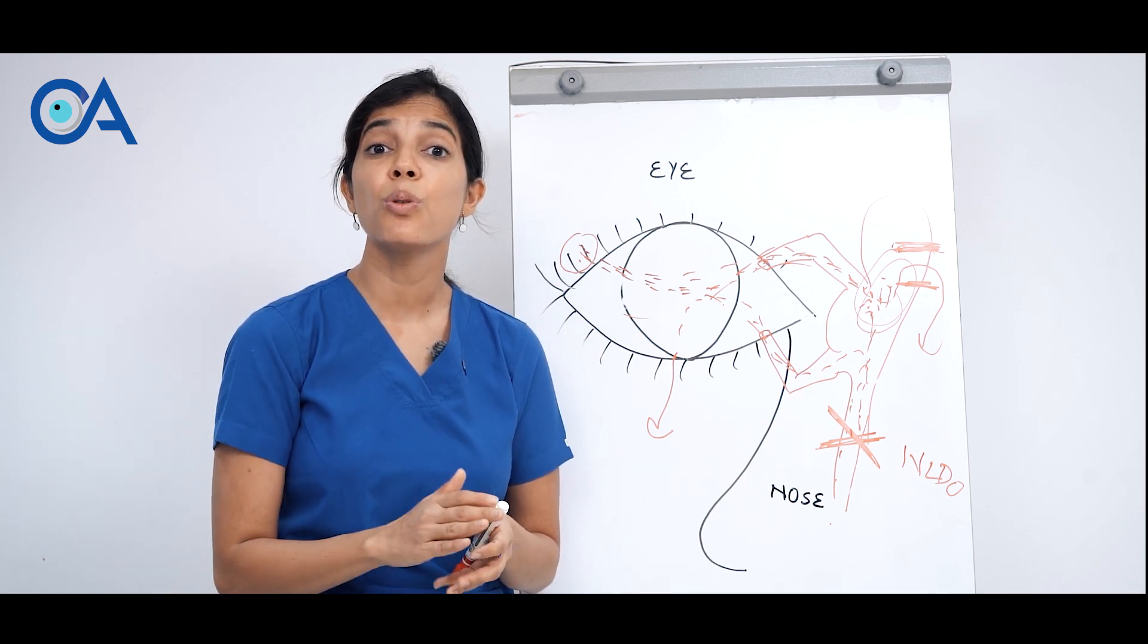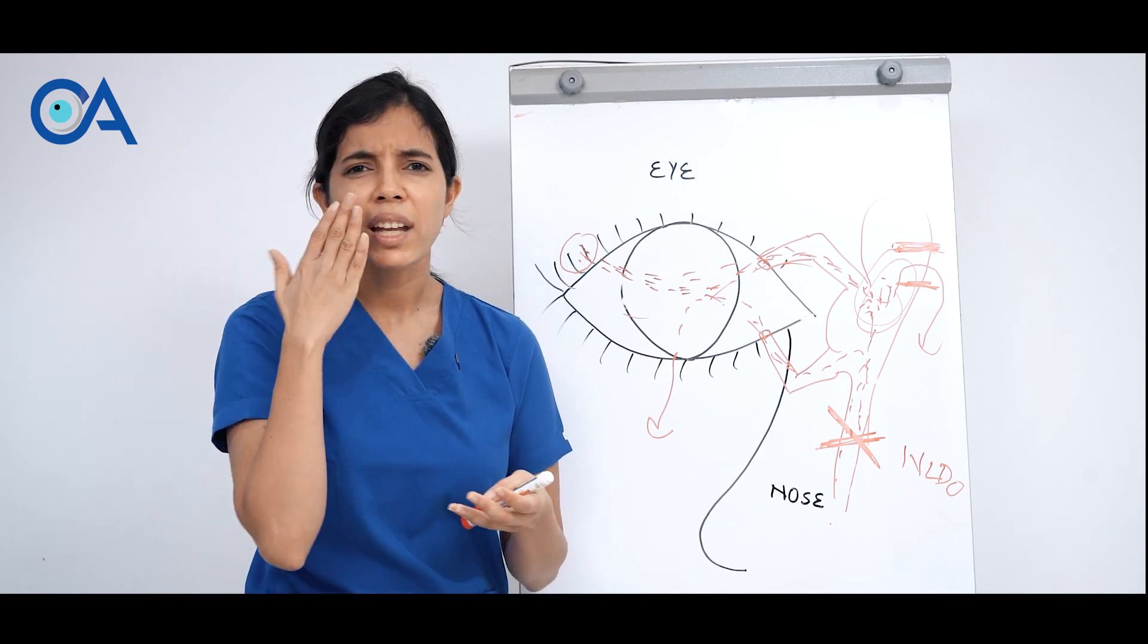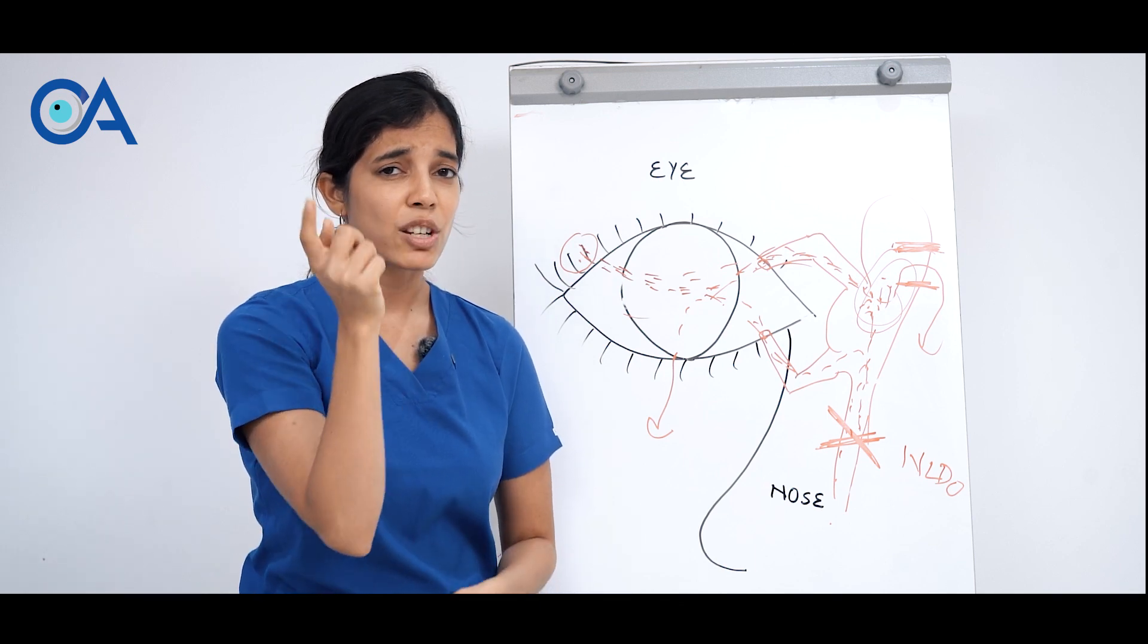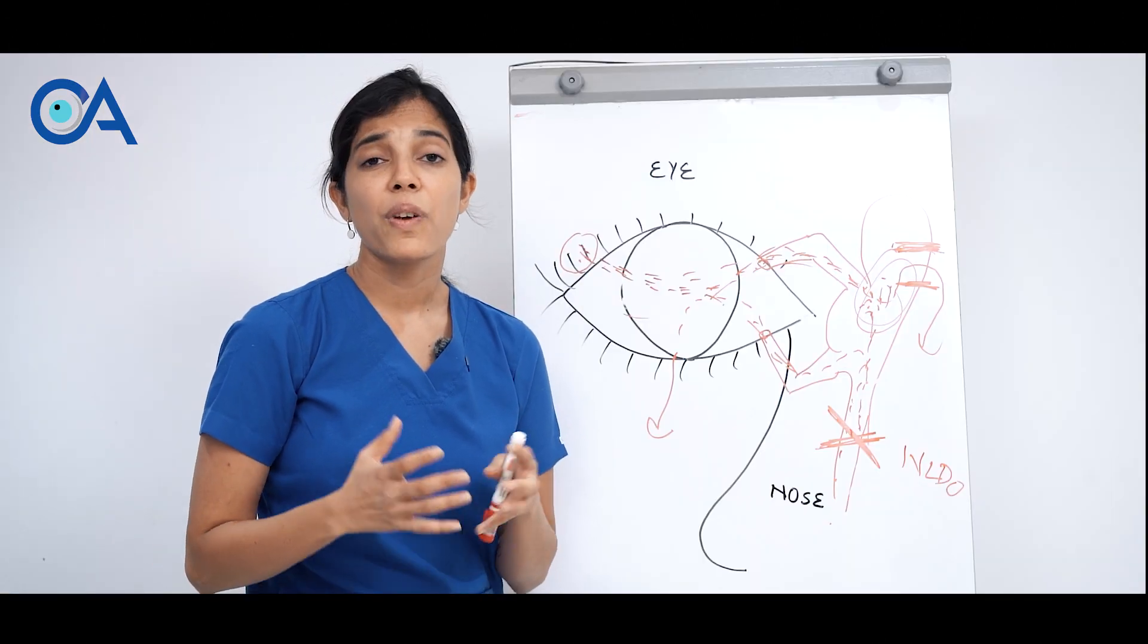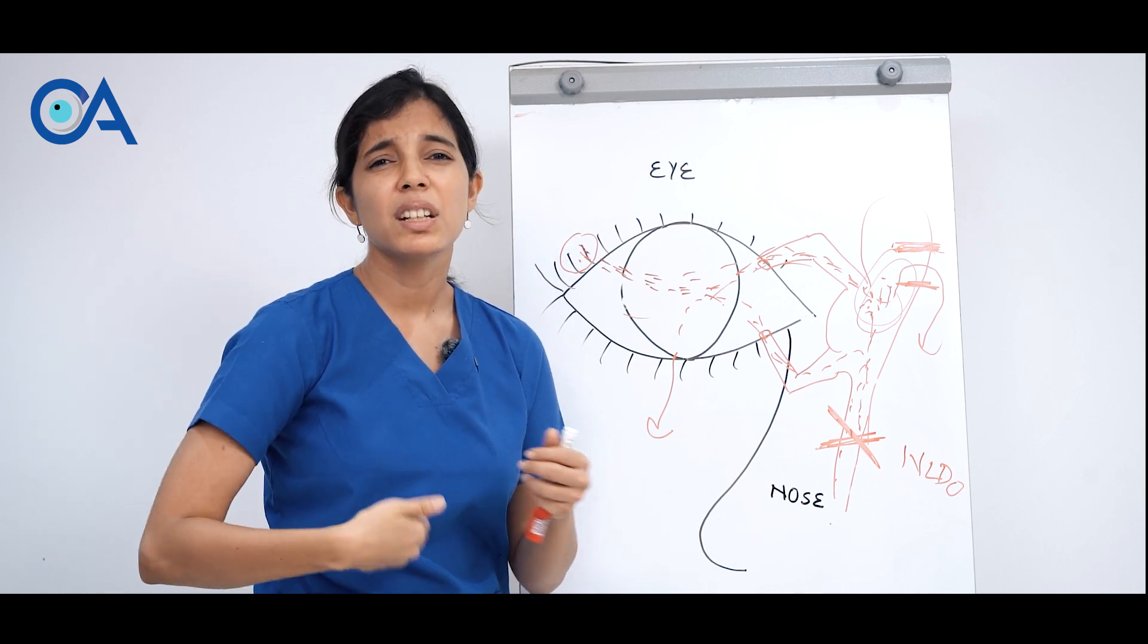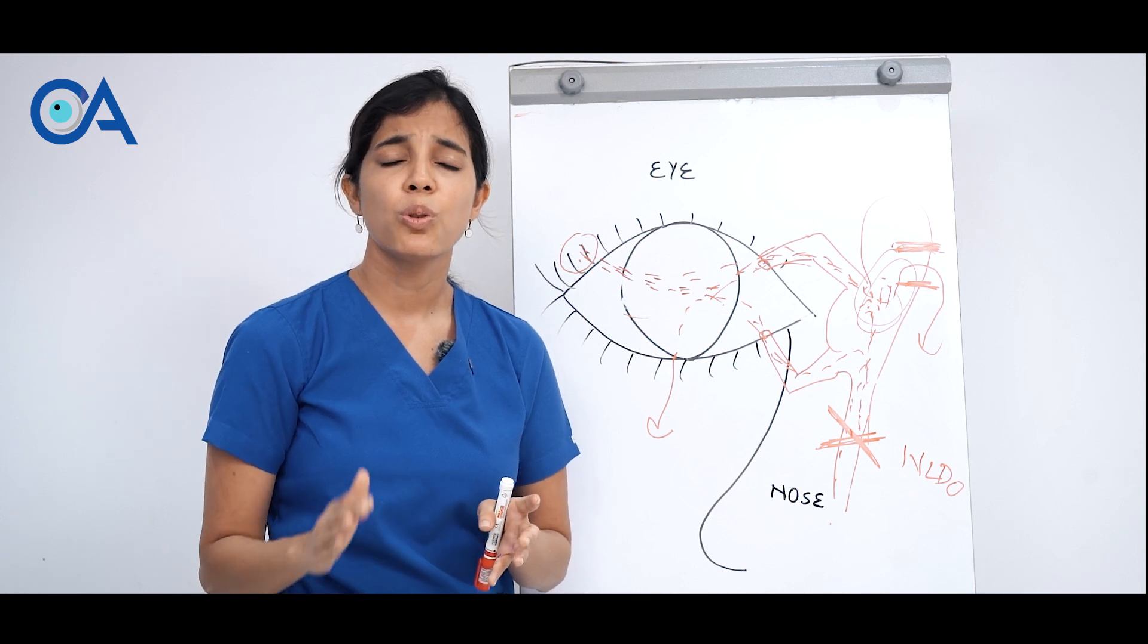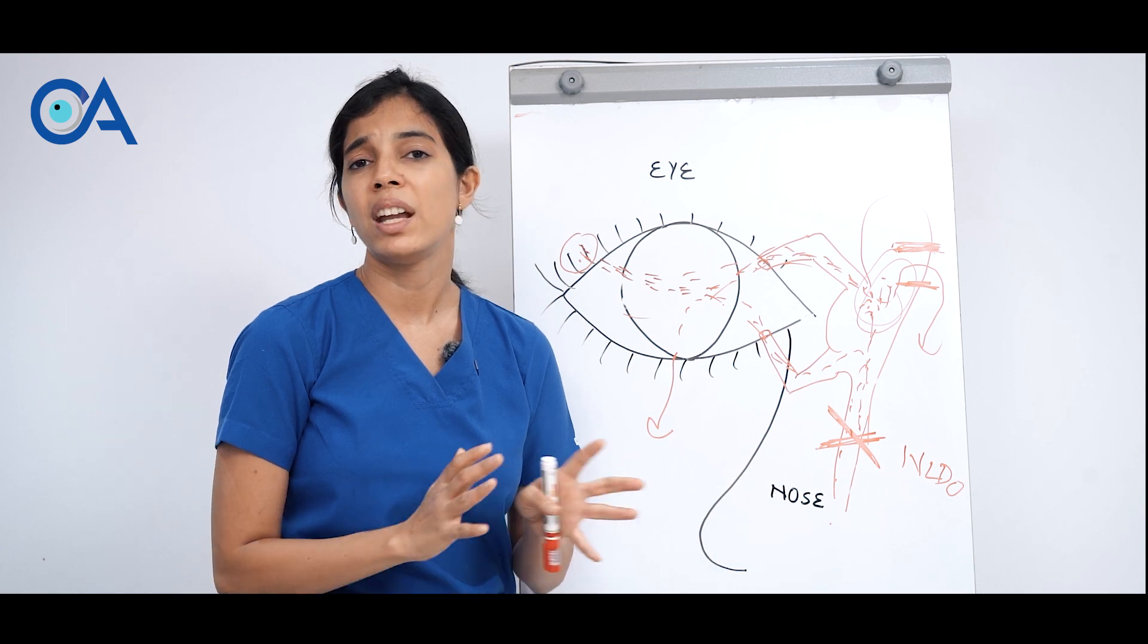Now what happens if you don't do this surgery? If you avoid this surgery and you're like okay let the watering happen, I'll just wipe it. Because of accumulation of water here in the tear sac you'll start getting infections here. That infection can occur anytime, it may take three months or it may take a year. We don't know when it will occur but it will surely occur and once it starts occurring it will occur repeatedly. Sometimes that infection will spread to the eye and can cause vision problems also. So this surgery is compulsory, it's not optional.